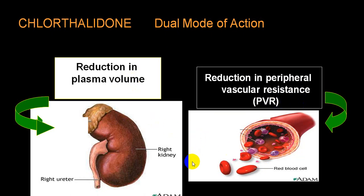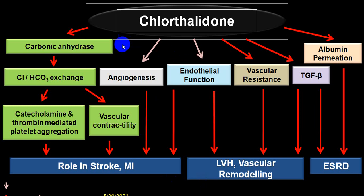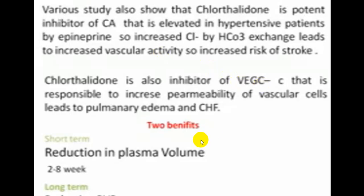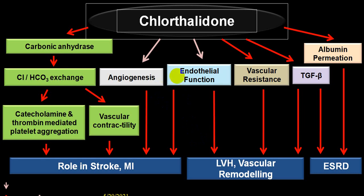The two main actions of chlorthalidone are: reduction in plasma volume through loss of sodium, chloride, and water; and peripheral vasodilatation reducing vascular resistance. By acting at carbonic anhydrase level, chloride and bicarbonate exchange is affected, reducing catecholamine and thrombin-mediated platelet aggregation, which has a beneficial effect on stroke and MI. By acting on VGC (vascular growth factor), it reduces angiogenesis, further reducing stroke and MI.